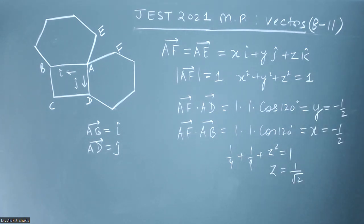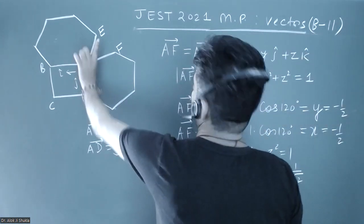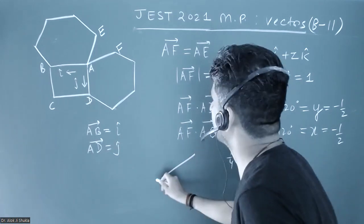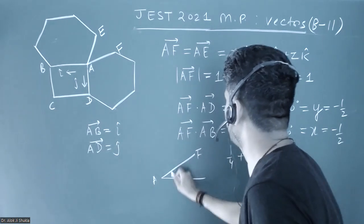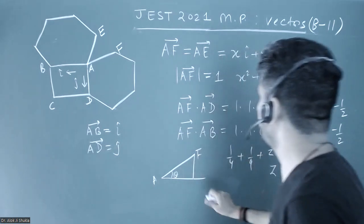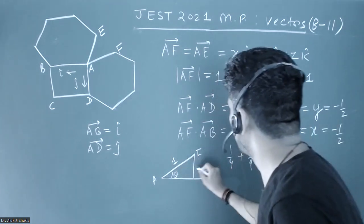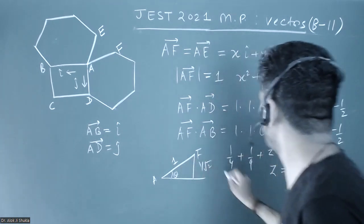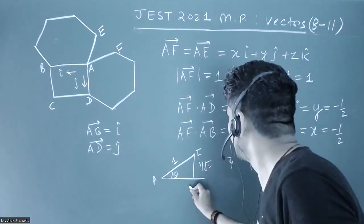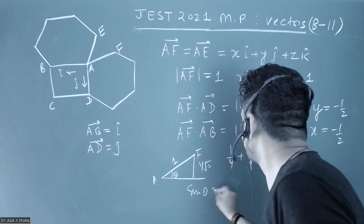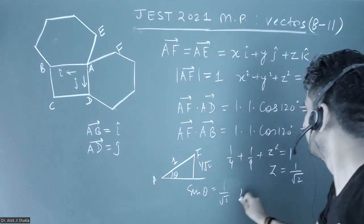If AF vector is making angle theta with the plane, and the perpendicular component is 1/√2, this vector is 1 and the perpendicular component is 1/√2. Taking sin(θ) as perpendicular upon hypotenuse, we get 1/√2, so theta equals 45 degrees.